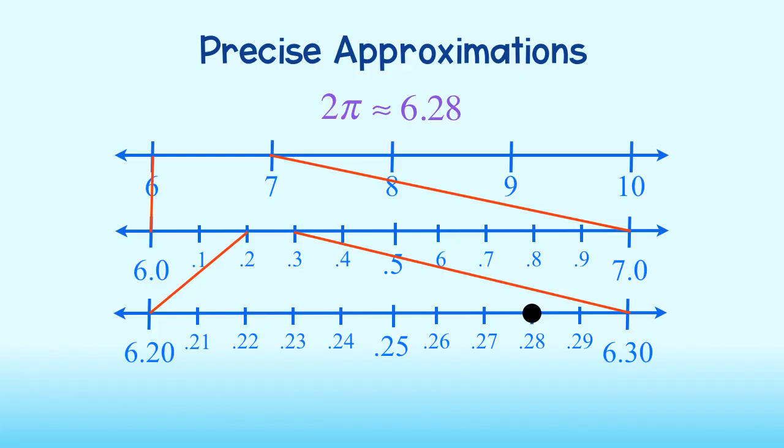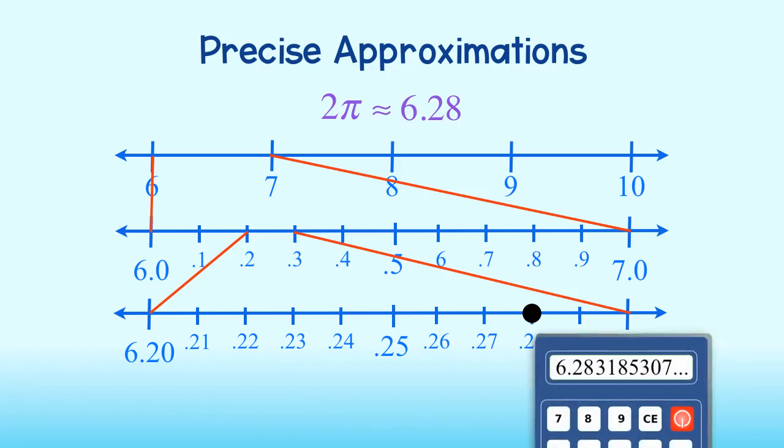Could we continue to find a more precise approximation? Sure! A look back at our calculator shows the next digit to be a 3. So, let's enlarge the area between 2.8 and 2.9.